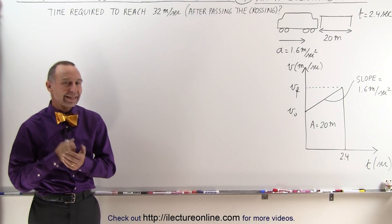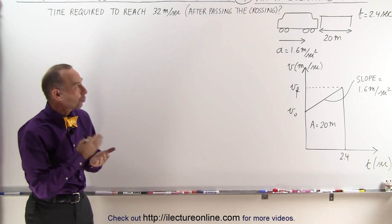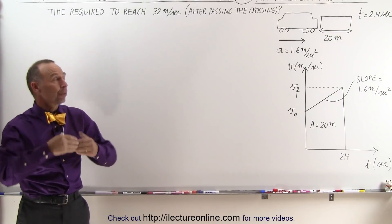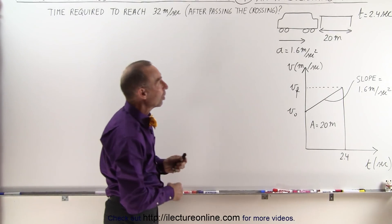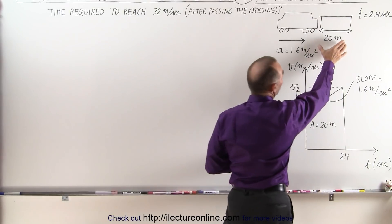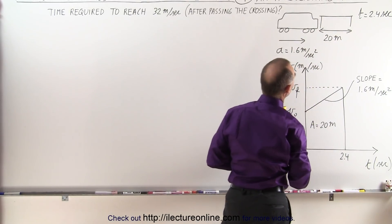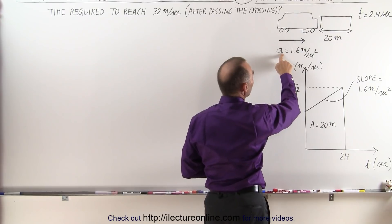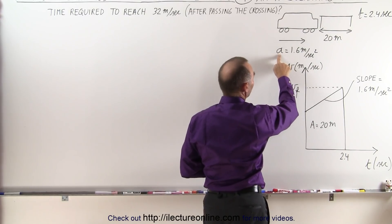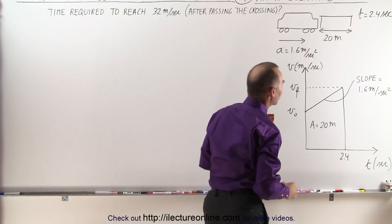Welcome to ElectronLine. In this example, we have a train that's crossing a railroad crossing 20 meters long. The time it takes for the train to cross the crossing is 2.4 seconds, and while the train is crossing, it's accelerating at 1.6 meters per second squared.